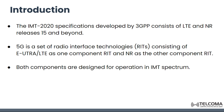The IMT — International Mobile Telecommunications 2020 — specifications were developed by the Third Generation Partnership Project (3GPP). It consists of Long-Term Evolution (LTE) and New Radio (NR), Release 15 and beyond. So 5G is basically a set of radio interface technologies consisting of two component RITs: eLTE (or LTE) as one component, and New Radio as the other.